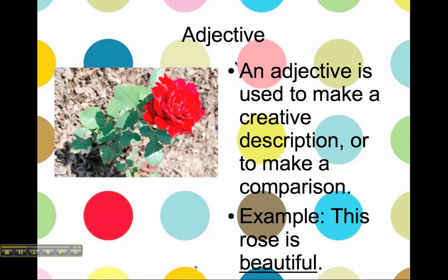Adjectives. An adjective is used to make a creative description or to make a comparison. So the example we have is the sentence: this rose is beautiful. We're describing the rose in a creative way by using the word beautiful, which makes beautiful an adjective.